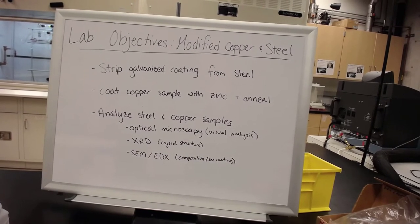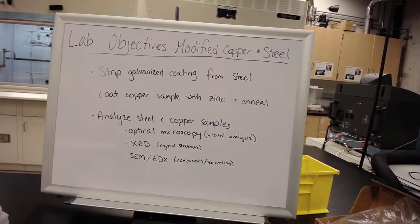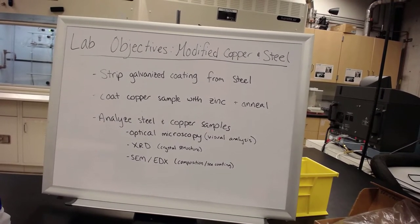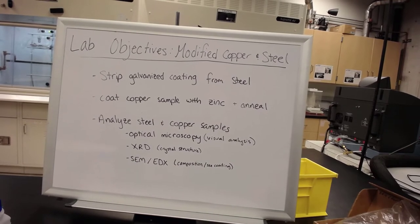Then we're going to coat a copper sample with zinc and anneal it, and analyze both samples using optical microscopy to see the differences.